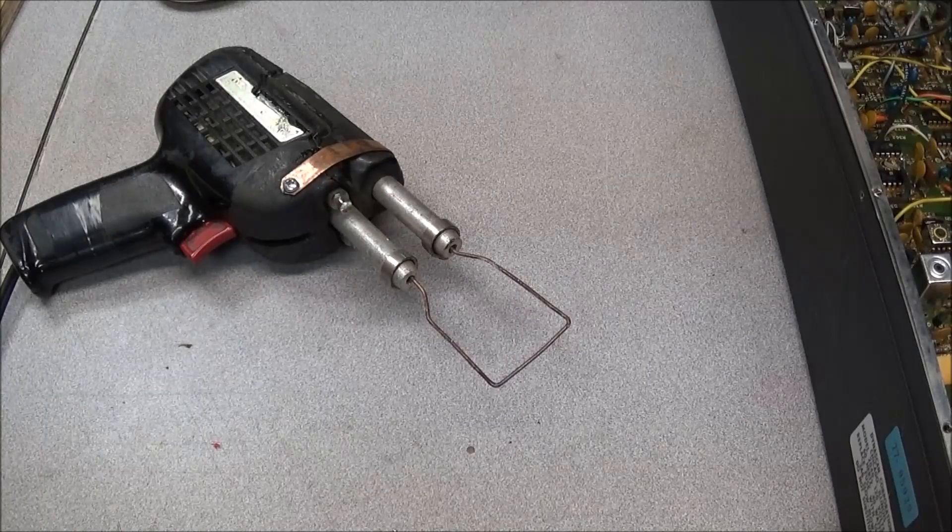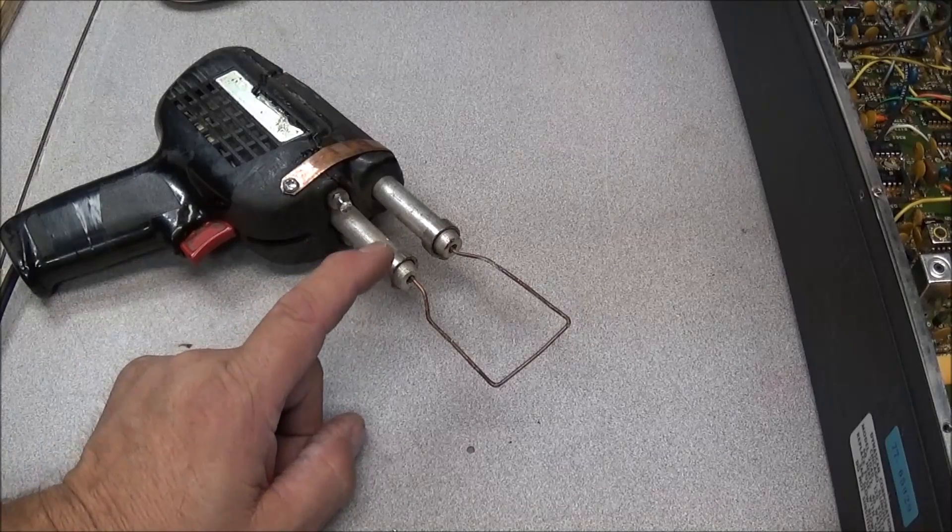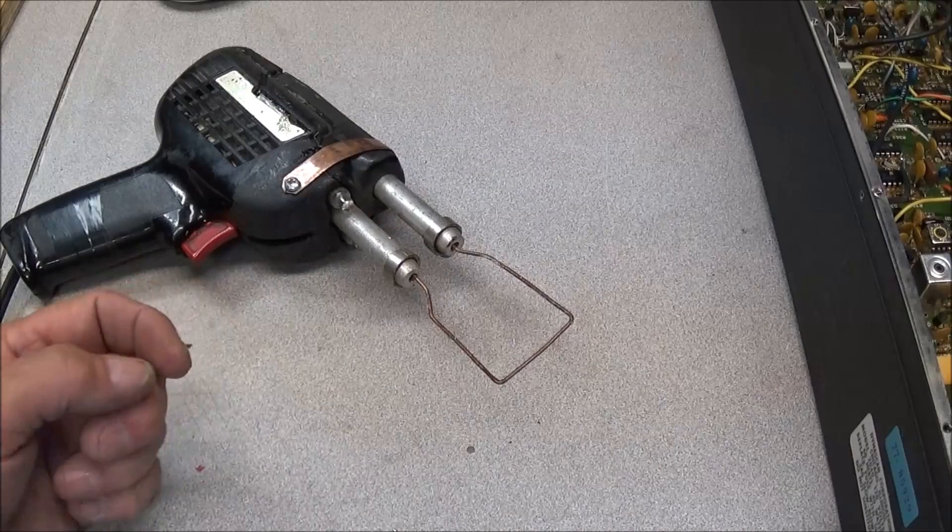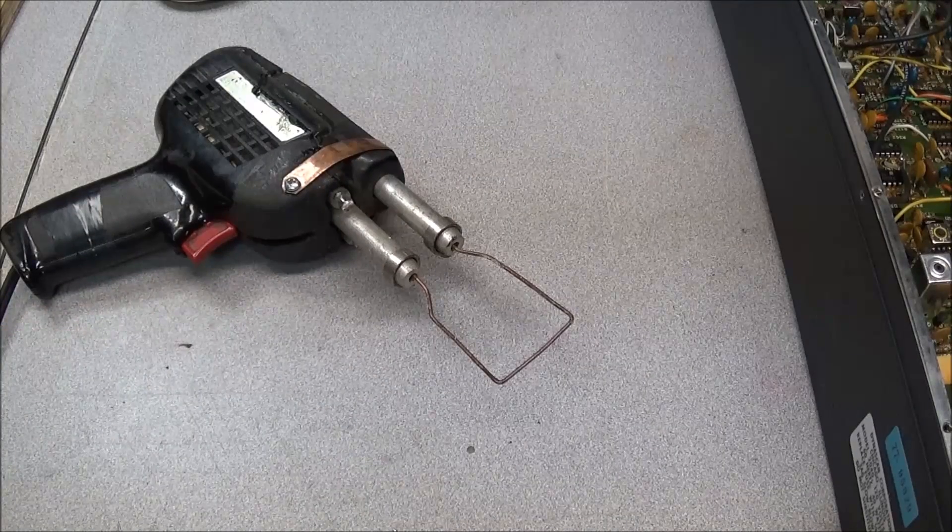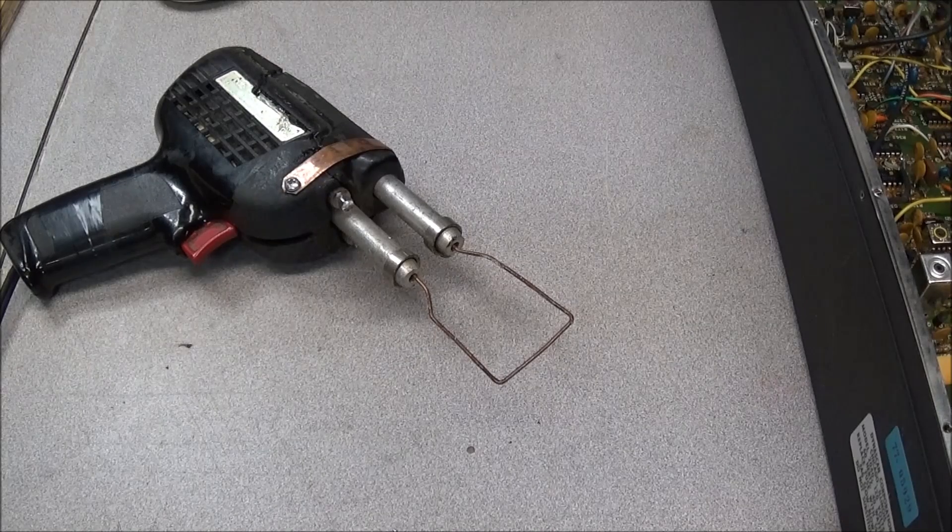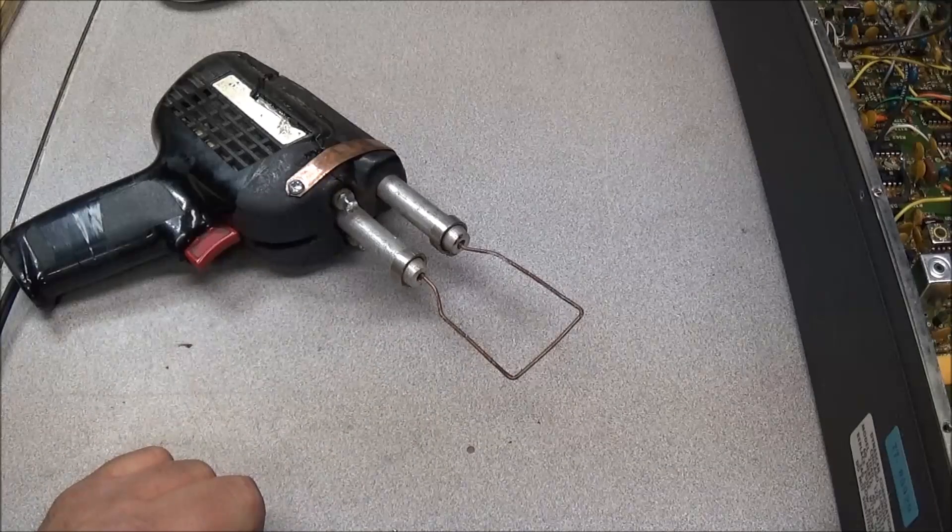In one of Paul's videos from Mr. Carlson's lab, he showed us how to put a piece of wire on a soldering iron to solder chassis. Well, this also works real good for cutting styrofoam.